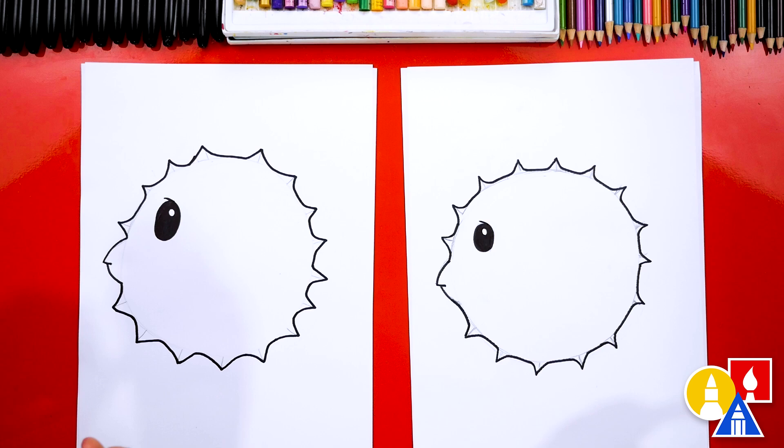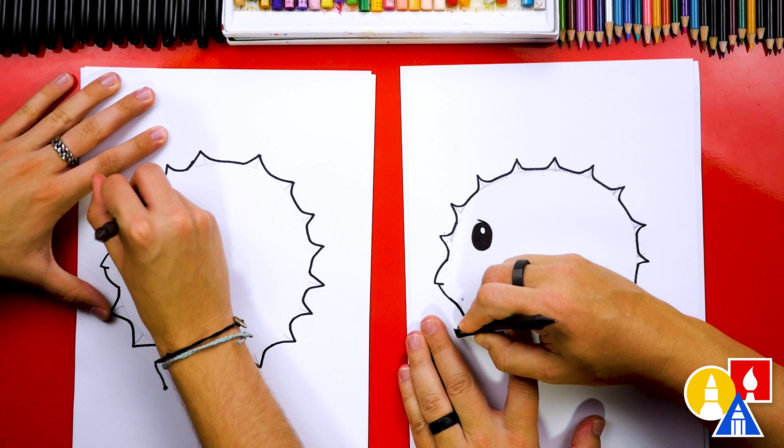Now let's switch to our eraser and erase all of the pencil lines or the guidelines that you can still see. This part will fast forward. So remember to pause the video if you ever need extra time to complete a step.